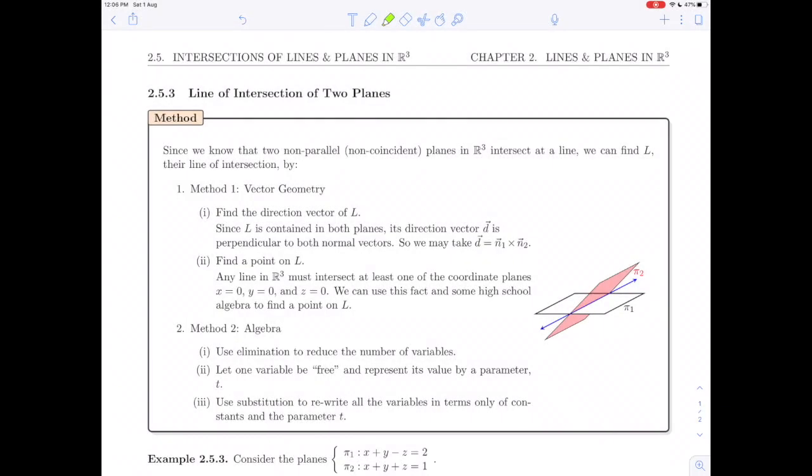This video is continuing section 2.5 on the intersection of lines and planes. We're going to start section 2.5.3, the line of intersection of two planes, and in particular we're going to do example 2.5.3. We're going to start that in this video and in the next video we are going to finish it. The reason we're splitting this example in two is because there are two methods that we will see.